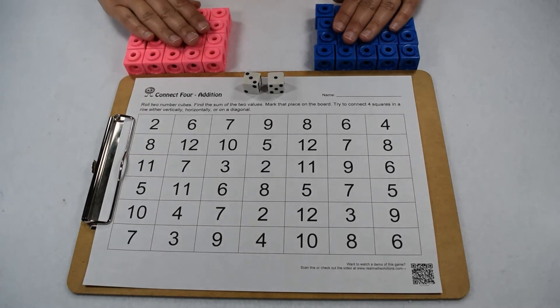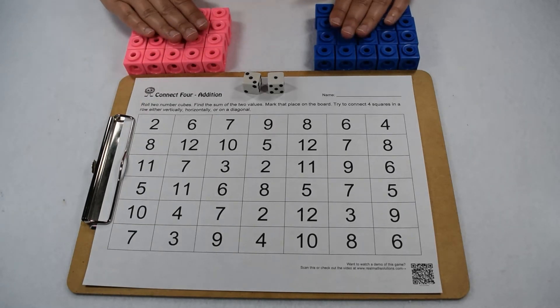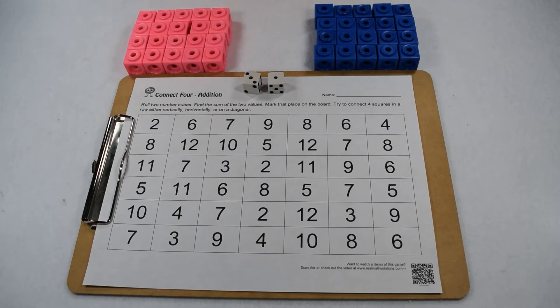Each player needs a different color marker, about 20 of them each. Here we used unit cubes, but you can really use two of anything as long as they're different colors. And each pair of players is going to need two dice.